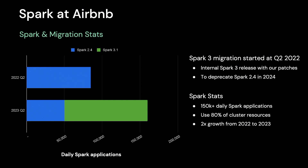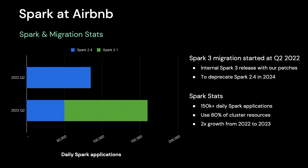Our migration to Spark 3 began last year. At that time, we had 80,000 daily Spark applications, all on Spark 2.4. Now, one year later, the number grew to more than 150,000, with two thirds of our jobs on Spark 3.1. This significant growth of Spark 3.1 comes from several sources, including the migration of existing Spark 2.4 jobs, Hive to Spark 3 migration by several large platform teams, and organic growth with new pipelines.